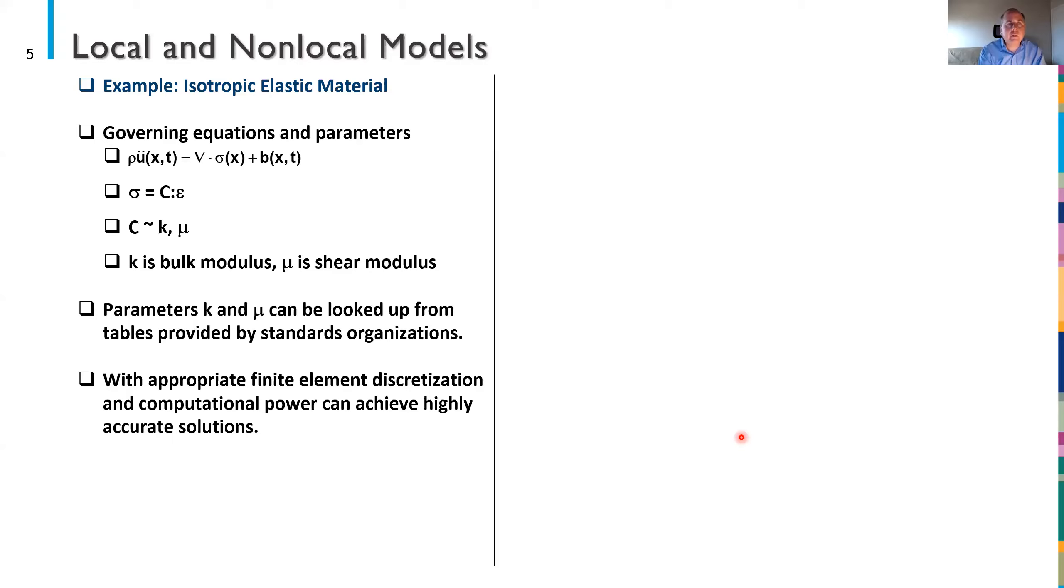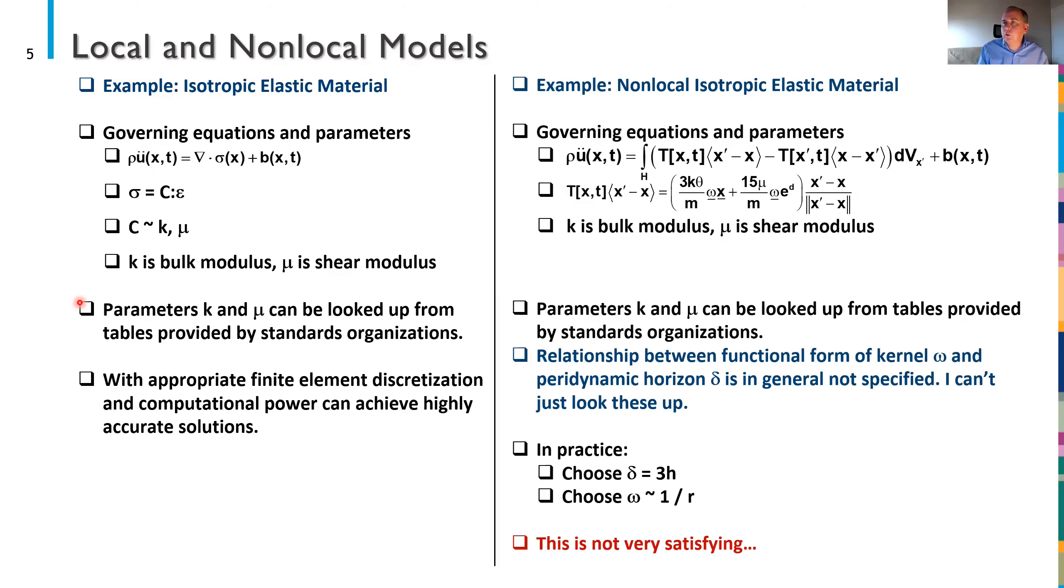Let's talk a little bit about how you might use a local model. Say if I wanted to do a computer simulation or numerical simulation with an isotropic linear elastic material. I know my governing equation. I have a stress and strain tensor. I need to know some material properties, in this case a bulk modulus and a shear modulus. I can look these up or there are simple experiments you can do to determine them if you want in a laboratory. But in general these are provided by standards organizations. With an appropriate finite element discretization and enough computational power, I can solve this equation as accurately as you like. And engineers have been doing this for many decades. So what I really want to do is do the same thing for non-local models.